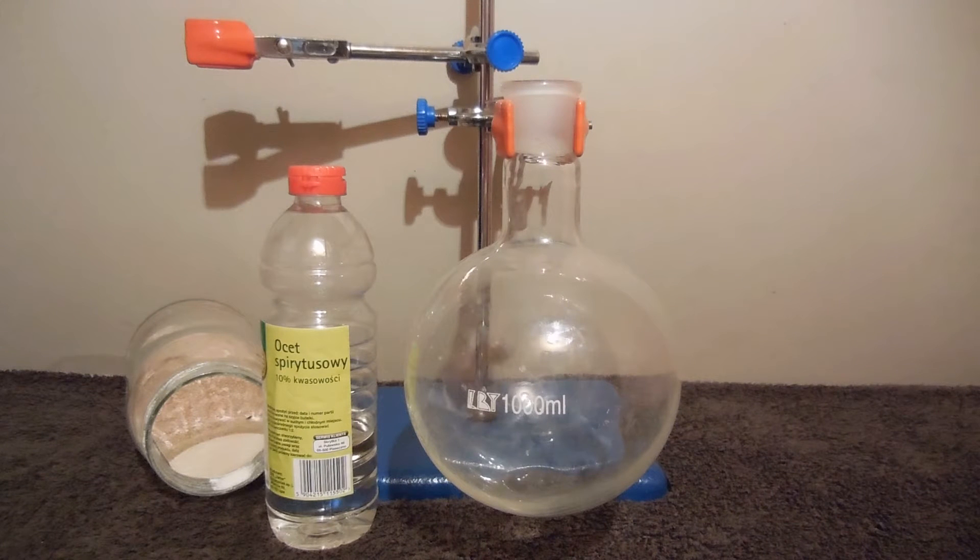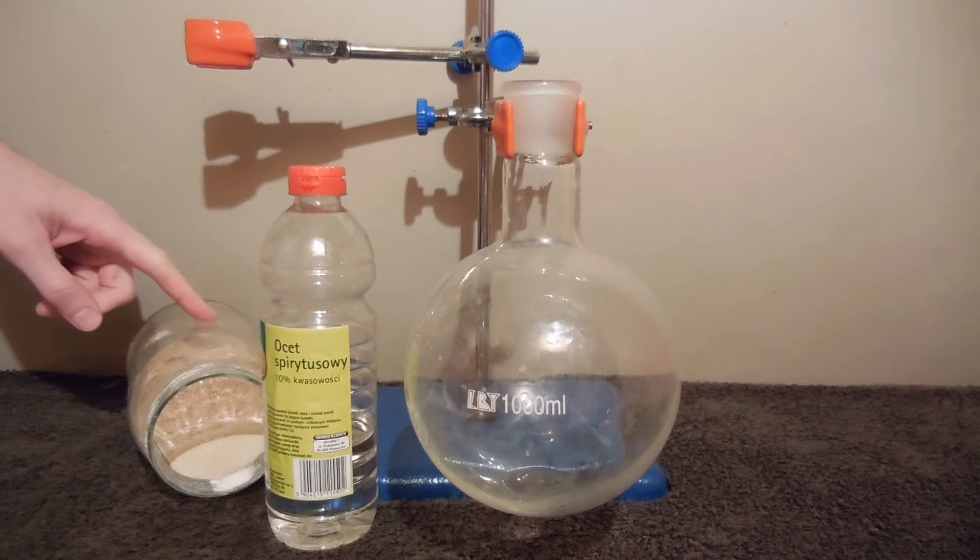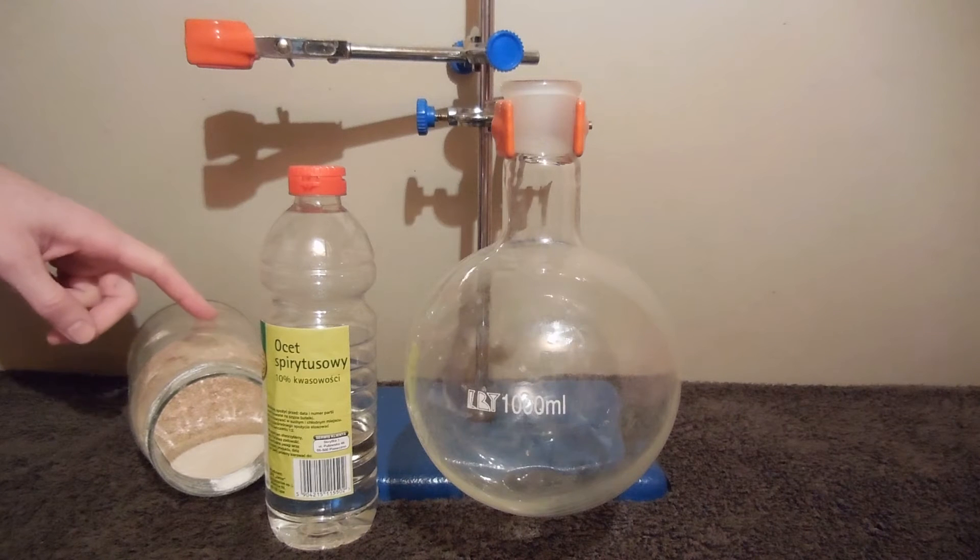Hello. In this experiment I will show you how to make calcium acetate. In this container I have calcium carbonate made from eggshells like I showed in a previous video. It's a bit contaminated by the eggshell membrane which is protein.